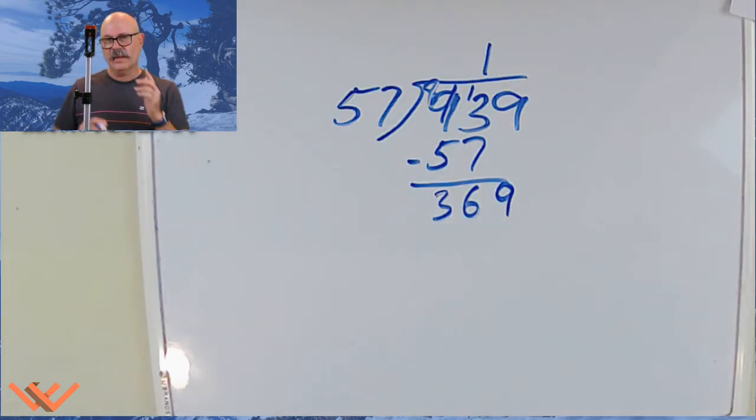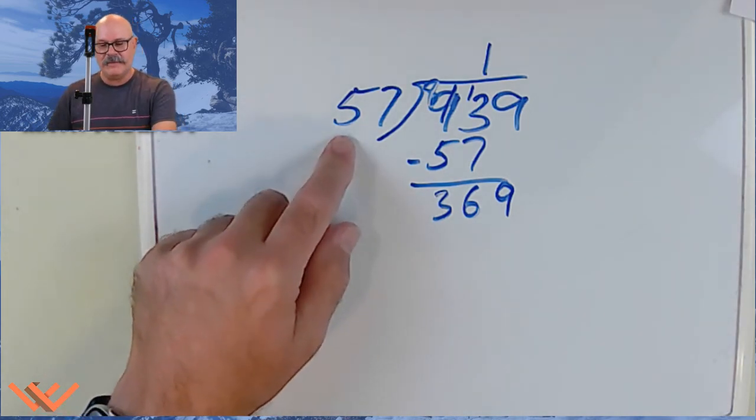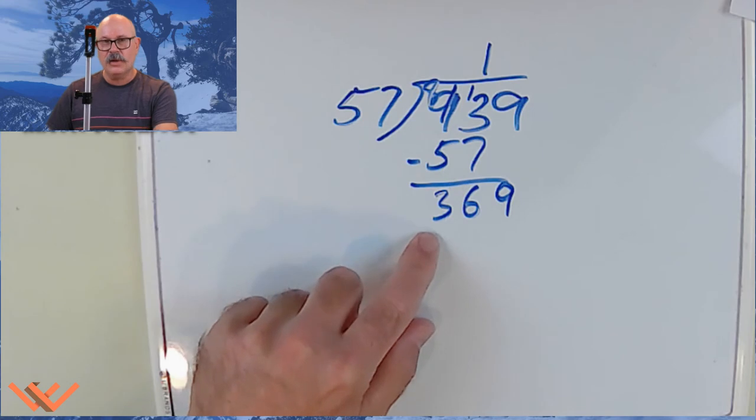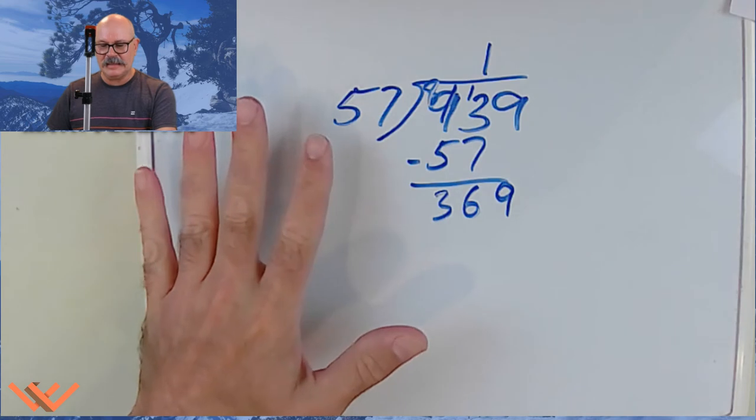369. Hmm. Now, we can look at this. Instead of going, we can round this down and say, well, how many 50s go into here? Or we can round it up. I think I'm going to round it up. So, I'm going to say 60.